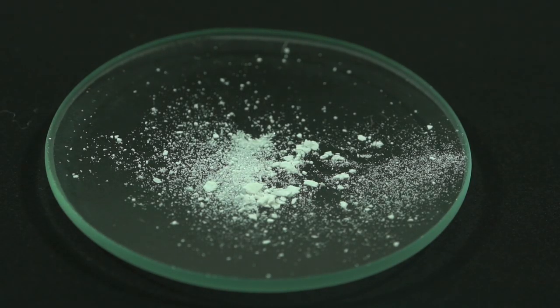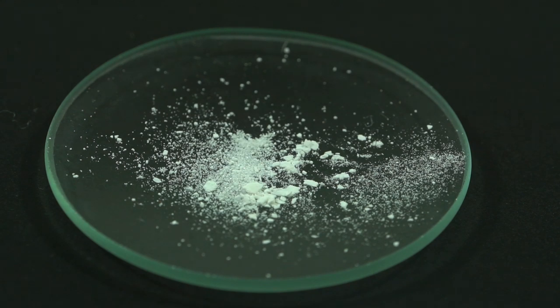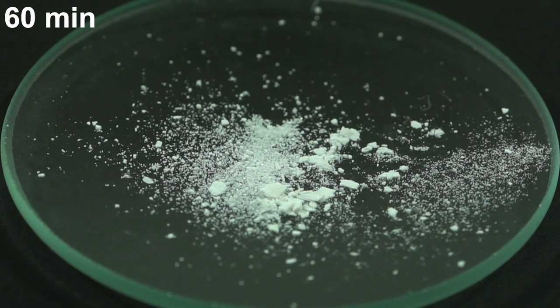Chromium hexacarbonyl is white crystals, they are very volatile. Even at a temperature of 20 degrees Celsius you can see a noticeable amount of substance evaporating in an hour.